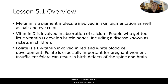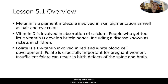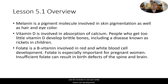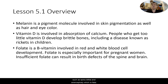Vitamin D is involved in the absorption of calcium, which is related to bone strength. People who have a shortage of vitamin D are going to develop brittle bones, including a disease known as rickets in children. Folate is a B vitamin — B9 — and it's involved in red and white blood cell development. Folate is especially important in fetal development for pregnant women. When you have an insufficient amount of folate, this can result in birth defects such as spina bifida and anencephaly, which is fatal.